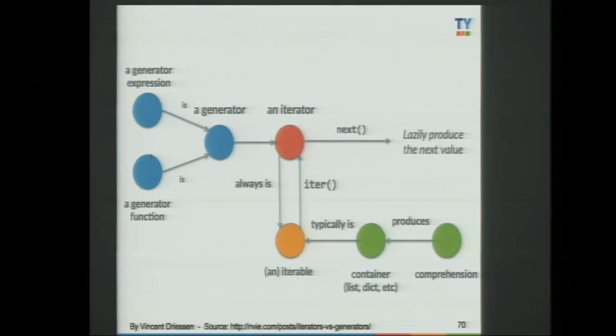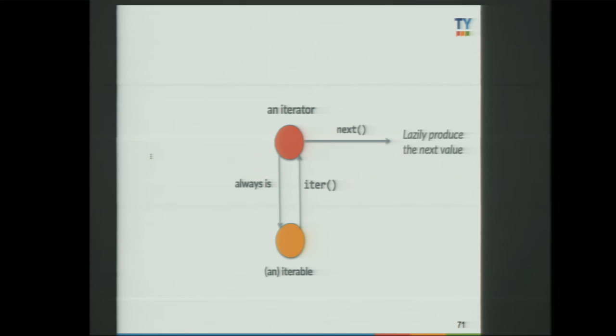I found a nice article by Vincent Driessen, and I use a graph from him — you should totally check it. We're going to explore the concept using this graph. Two concepts: iterable and iterator. An iterable is something you can call the iter() method on, and it will return an iterator. An iterator is something that produces a value when you call next() on it.